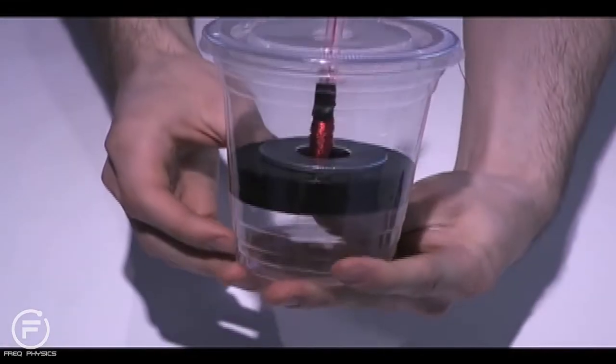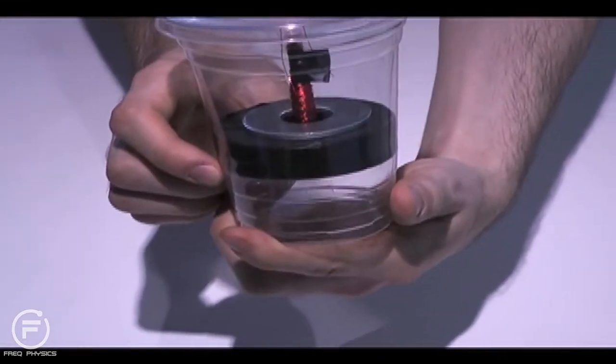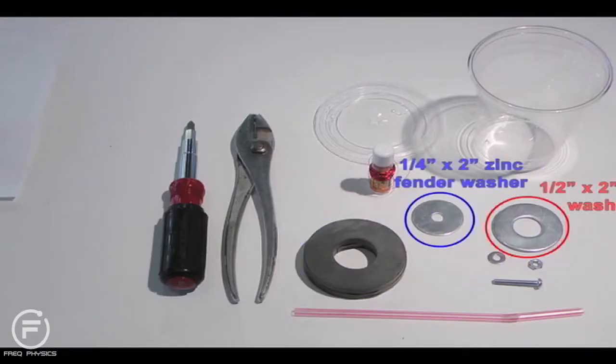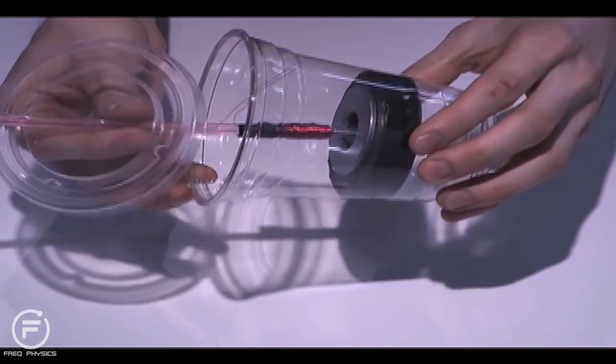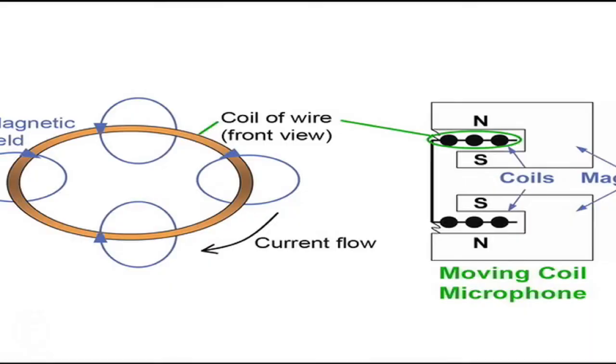It's really a lot simpler than it sounds. This is a microphone we built. We used only a magnet, a bolt, and some washers, some enamel-coated wire, a straw, and a plastic cup and lid.